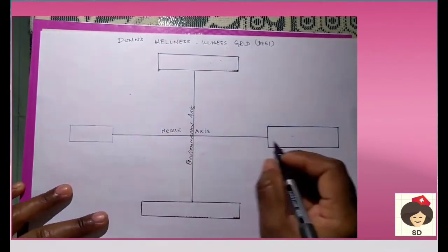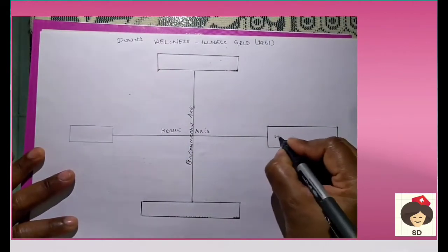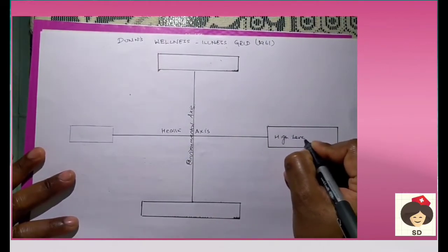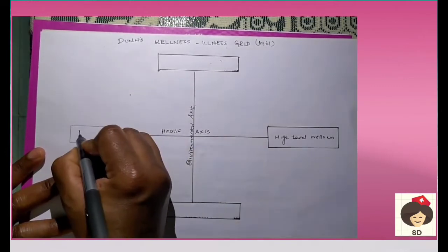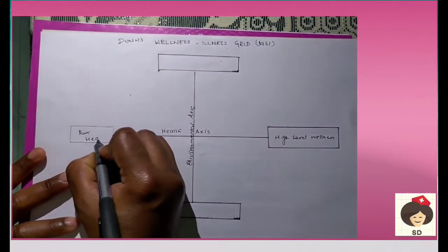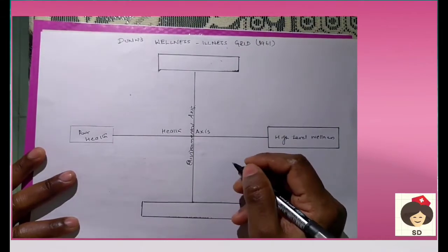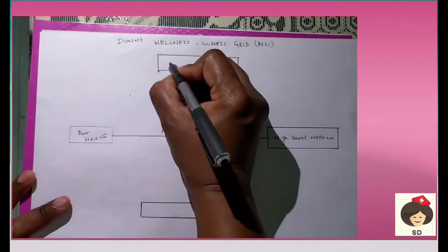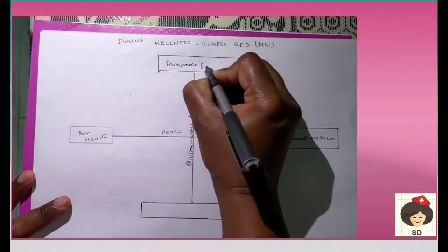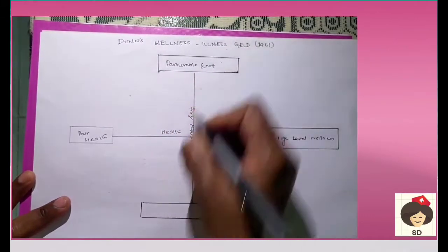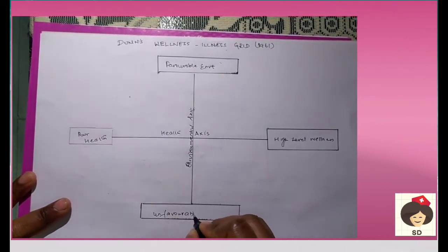In the health axis, there are two corners. On the right side is high level wellness, and on the left side is poor health. Similarly, in the environmental axis, there are two corners: on the top is favorable environment and on the bottom is unfavorable environment.